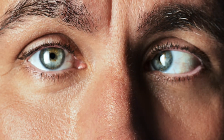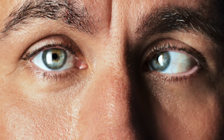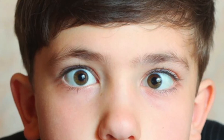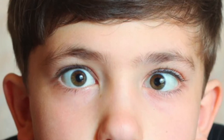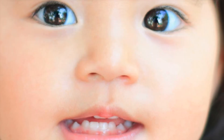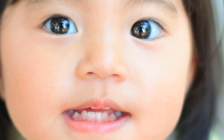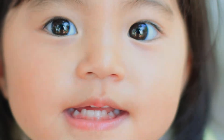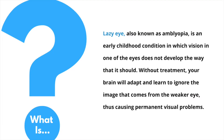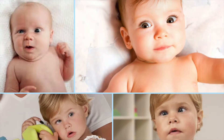Lazy eye, also known as amblyopia or strabismus, can be defined as the loss or lack of development of clear vision in one or both eyes due to the eye and brain not working together. This typically begins in infancy or early childhood.